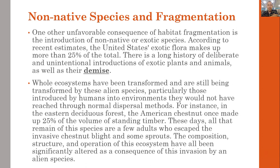For instance, in the eastern deciduous forest in America, the chestnut once made up to 25 percent of the volume of standing timber. These days, all that remains of the species are a few invasive chestnut blight sprouts. The composition, structure, and operations of these ecosystems have all been significantly altered as a consequence of this invasion by alien species.